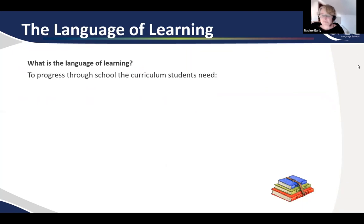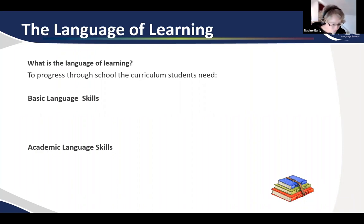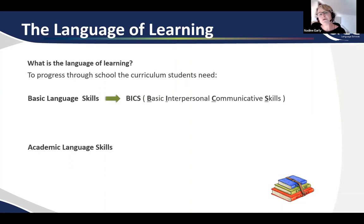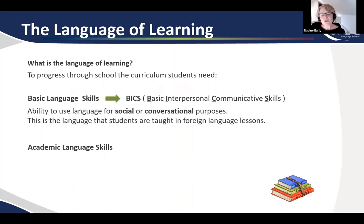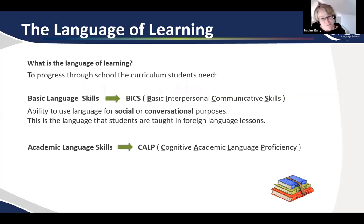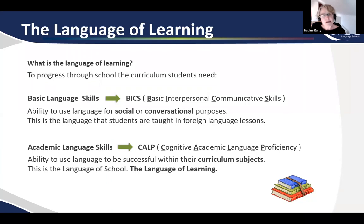So what is the language of learning? To progress through the school curriculum — and we're talking about secondary students, not primary students, teenagers — students need basic language skills and they need academic language skills. Basic language skills are sometimes referred to as BICS, or basic interpersonal communicative skills. This is the ability to use language for social or conversational purposes — the language that students are taught in foreign language lessons. Academic language skills, often referred to as CALP, is the ability to use language to be successful within their curriculum subjects. This is the language of school or the language of learning.